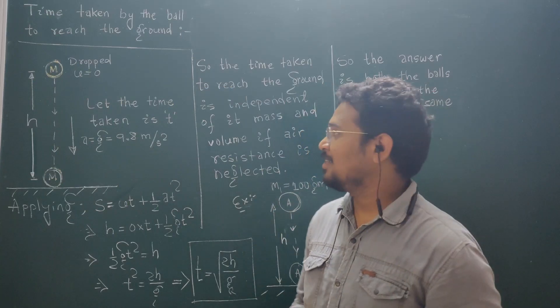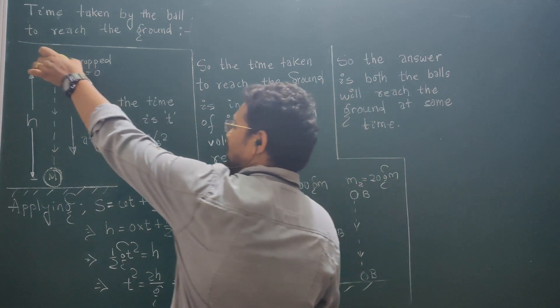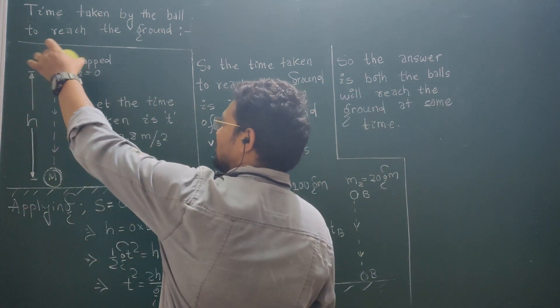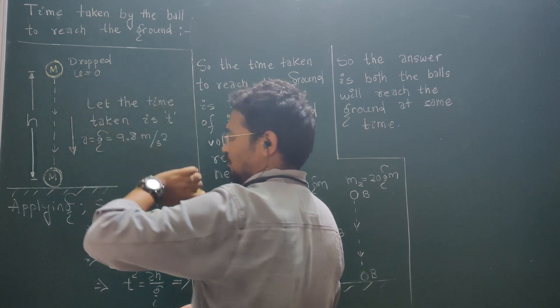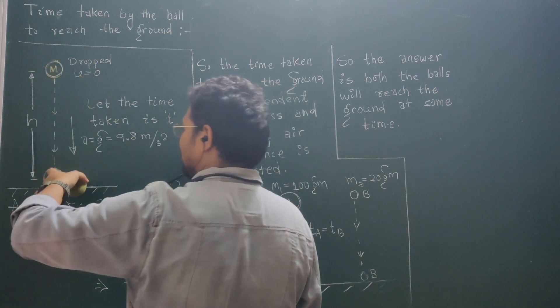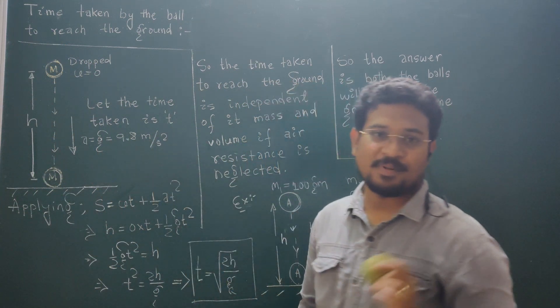Let's understand the physics behind it. Take a ball of mass m held at a height h from the ground level. Since the ball is dropped or released, the initial velocity is 0. We know that the acceleration in case of free fall is equal to acceleration due to gravity, g = 9.8 m/s².